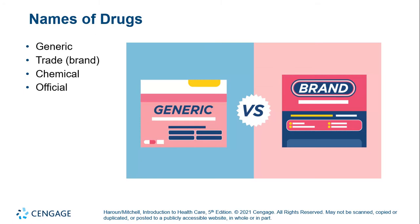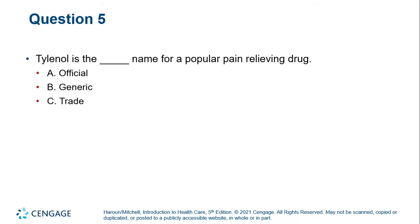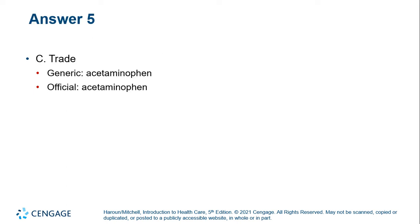When we look at drugs, there are several names for each drug: the generic, the trade, the chemical, and the official. So Tylenol — which one of those is it? It's the trade name. The generic and official name is acetaminophen.